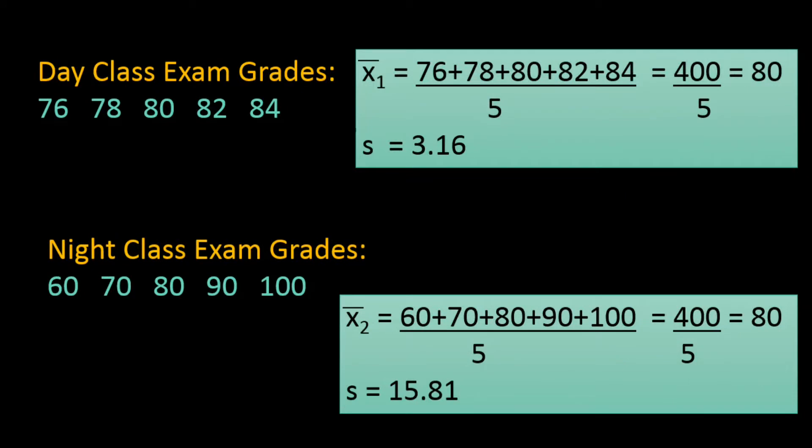The z-score can be calculated from any unit of measurement and results in what is called a standardized value. This means we can compare different units of measurement — whether they are in dollars, ounces, or points scored on an exam. Values from two different data sets with the same z-scores have the same relative location as measured in standardized units from the mean.